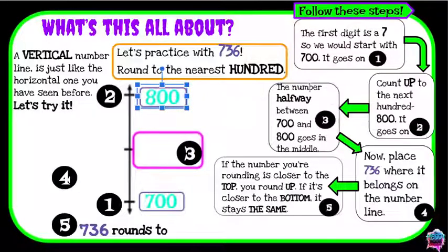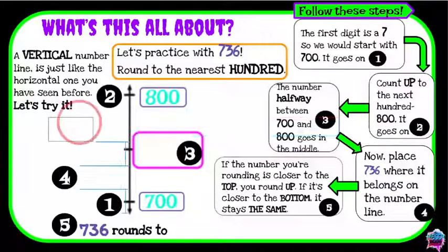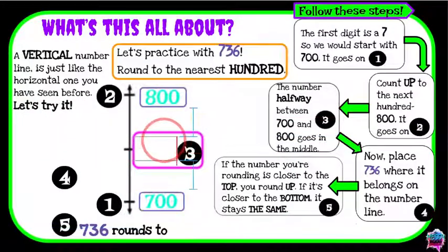Now I need to find the number halfway between 700 and 800. I know that the number halfway between zero and 100 is 50, so I'm going to take my 50 and I'm going to add the hundreds digit from my bottom number to the 50 to come up with my halfway number, which for this is 750.